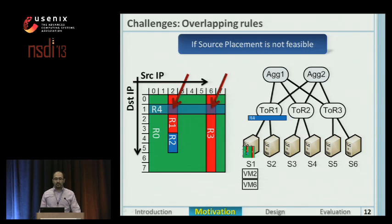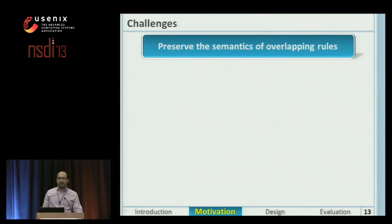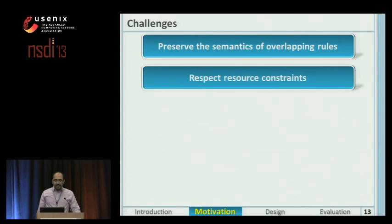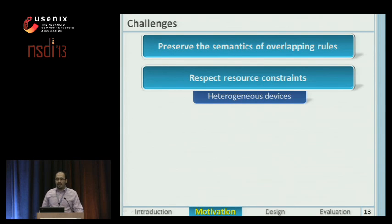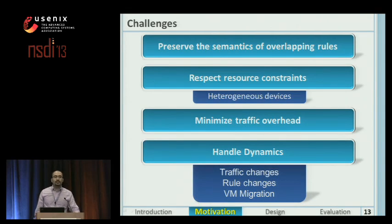For example, S1 blocks the traffic matching rules R1 and R3 that should have been accepted by rule R4. So the offloading scheme must preserve the semantics of overlapping rules. It must also respect the memory and CPU resource constraints among devices, and these resource constraints can be heterogeneous. The next challenge is how to minimize the traffic overhead caused by the offloading of the rules. The system also should handle dynamics such as traffic and rule changes, and VM dynamics such as VM migration.